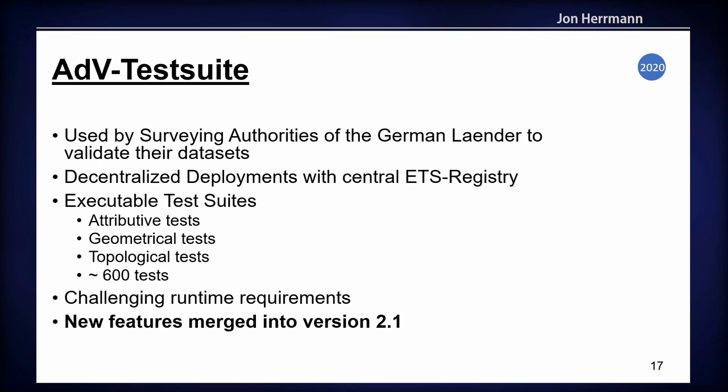The ADV test suite was used by the surveying authorities of the German Länder to validate their datasets. It executes about 600 tests, including topological tests. The Länder also have their own tests they execute locally, so it's a decentralized deployment in Germany with a central registry for the tests. For this project we had challenging runtime requirements, so a lot of the new features merged in version 2.1 are performance improvements.